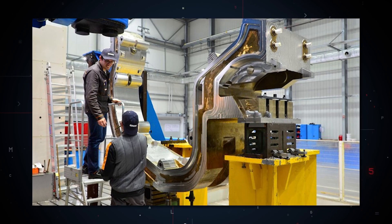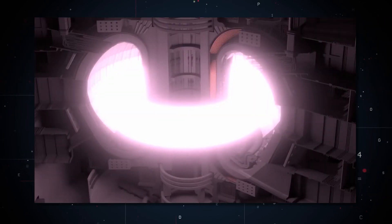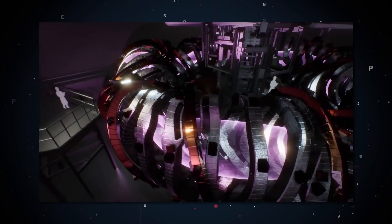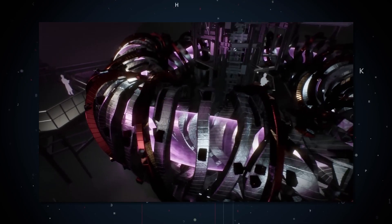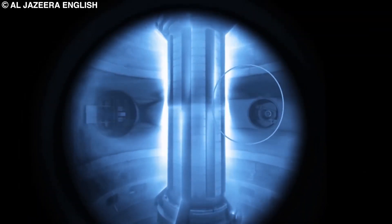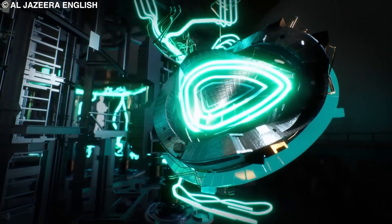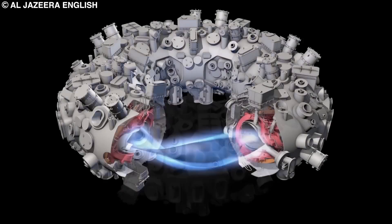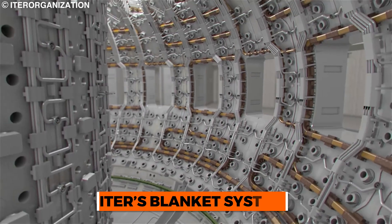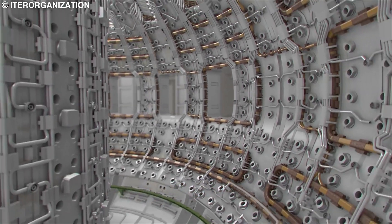Then, the diverter system, which is situated at the bottom of the vacuum vessel. The diverter extracts heat and ash produced by the fusion reaction, minimizes plasma contamination, and protects the surrounding walls from thermal and neutronic loads. As the fusion reaction takes off, the high-energy plasma particles will strike the walls of the tokamak at incredible speeds. This kinetic energy will be transformed into heat energy, which will be removed from the system by active water cooling.